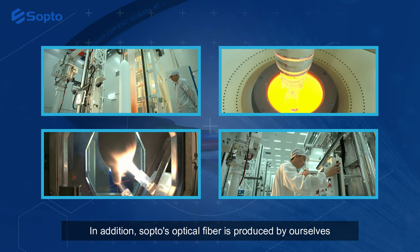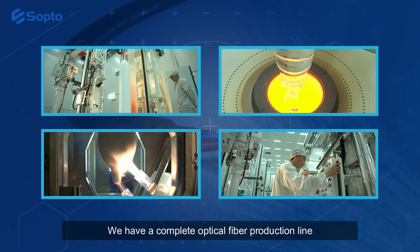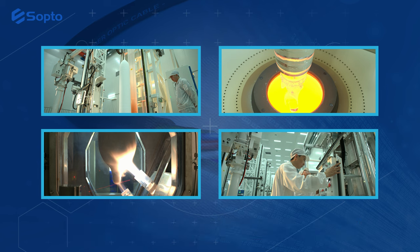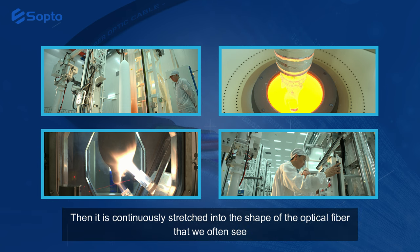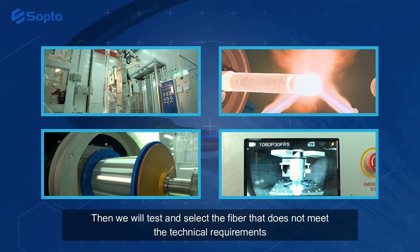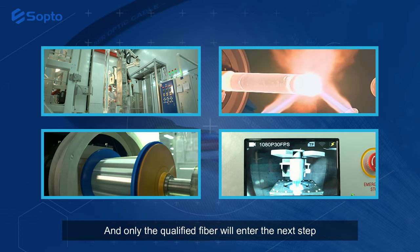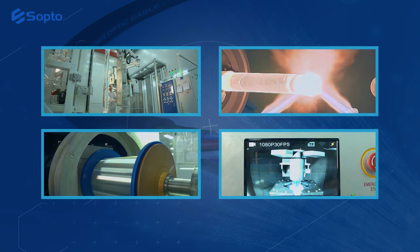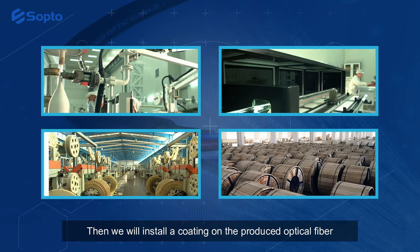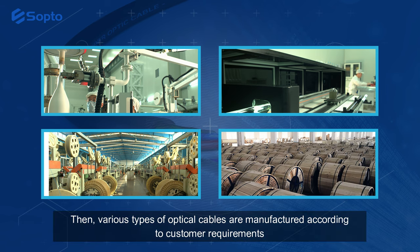Sopto's optical fiber is produced by ourselves — we have a complete optical fiber production line. First, we fuse a huge optical fiber preform, then it is continuously stretched into the shape of optical fiber. We then test and select out fiber that does not meet technical requirements, and only qualified fiber enters the next step. Finally, we install a coating on the produced optical fiber, and various types of optical cables are manufactured according to customer requirements.